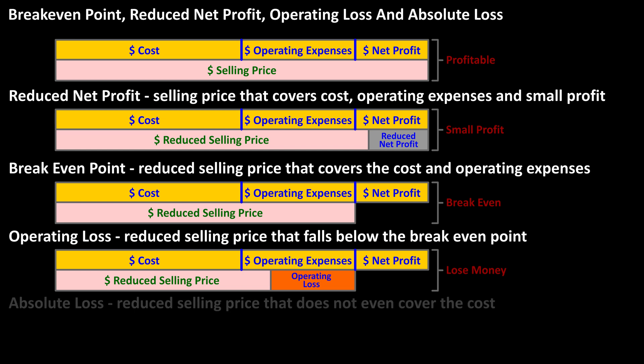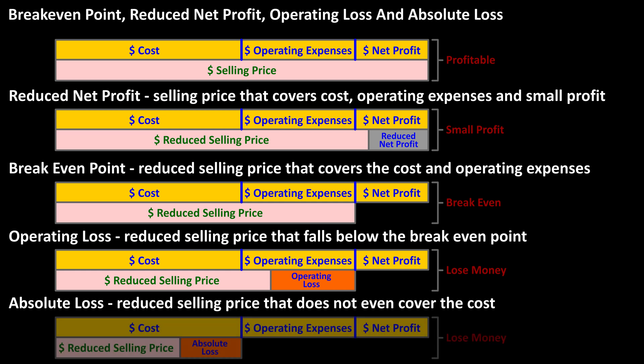An Absolute Loss is when the reduced price does not even cover the cost of the item, as you see in this chart. In both Operating Loss and Absolute Loss, the business loses money on the item.